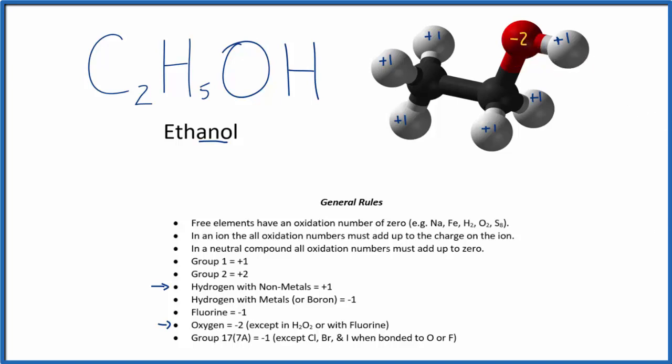What we need to figure out now are these carbons here, and they're different. This carbon here is bonded to three hydrogens. This carbon here has this alcohol group. So let's think of it as kind of two separate pieces. We'll figure out the oxidation number for this carbon, and then we'll figure out the oxidation number on this side here.